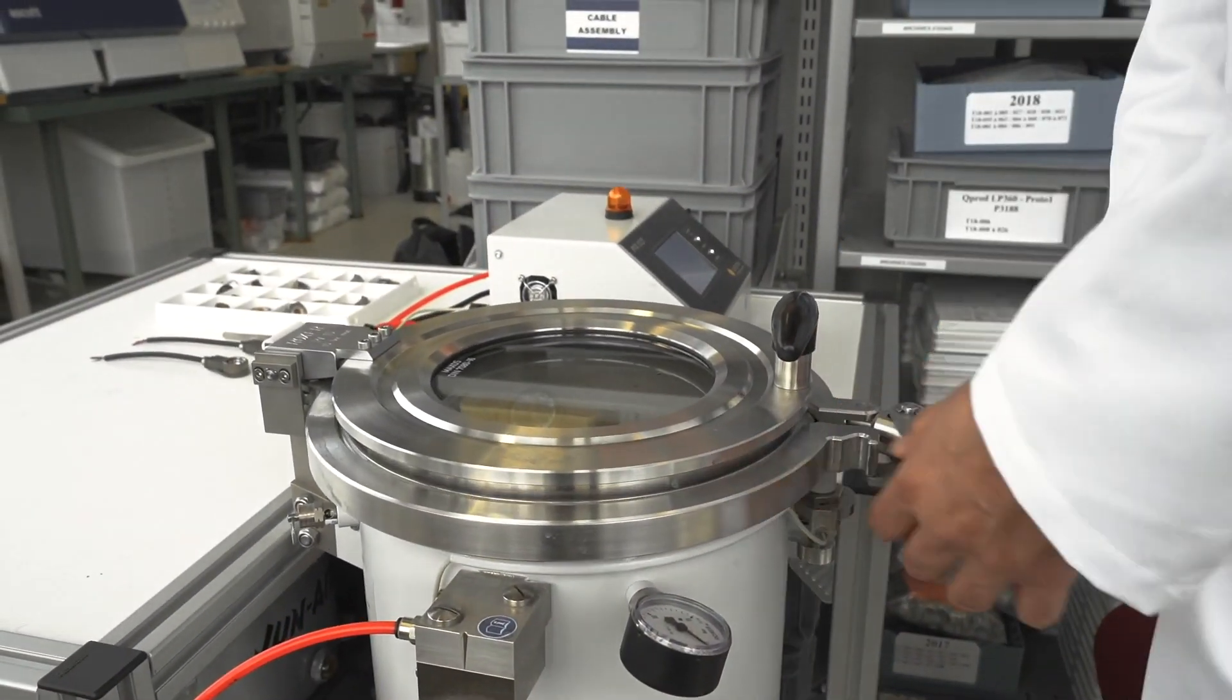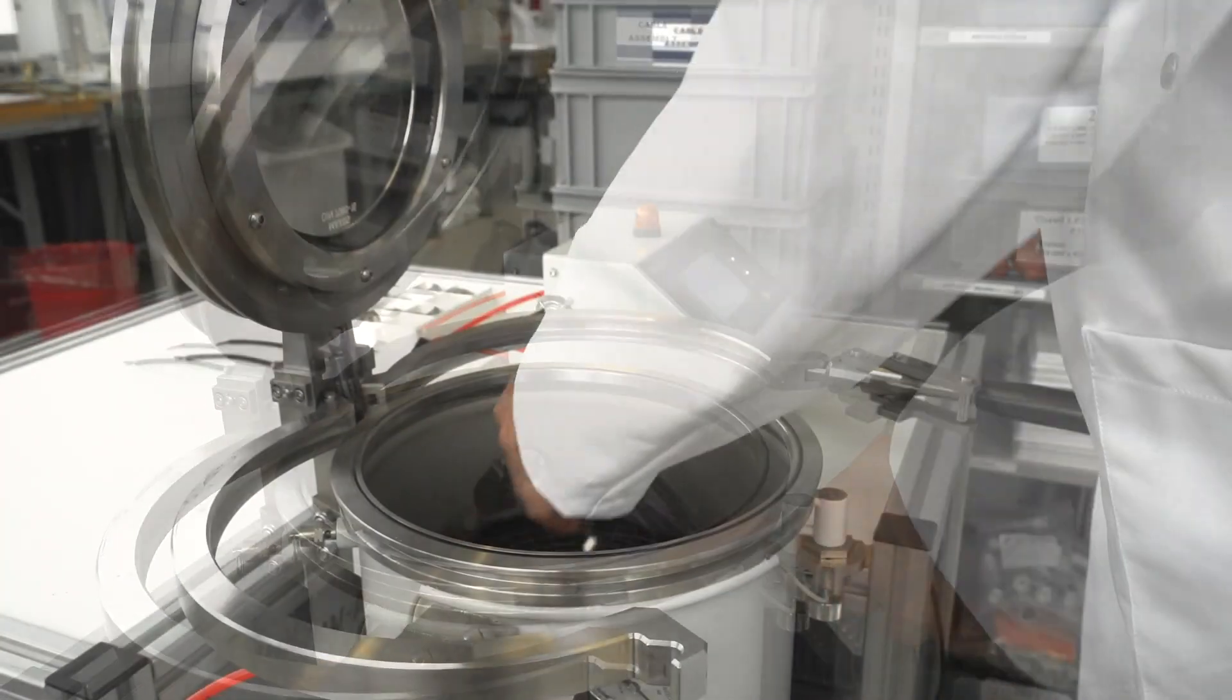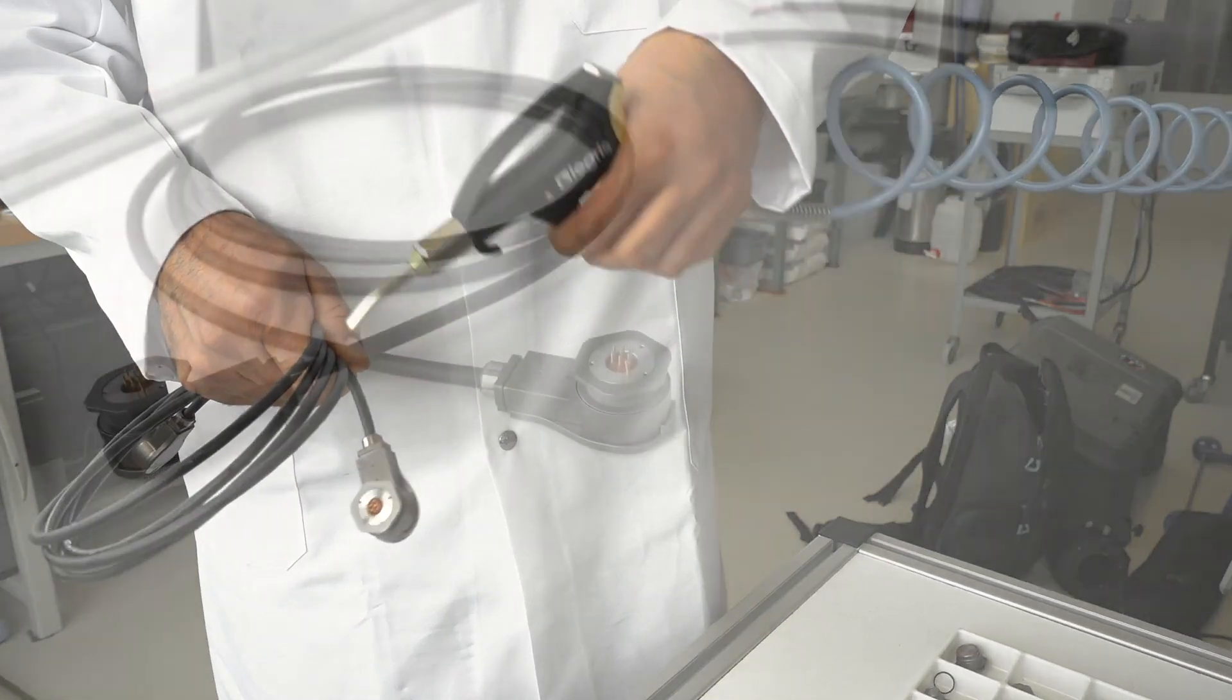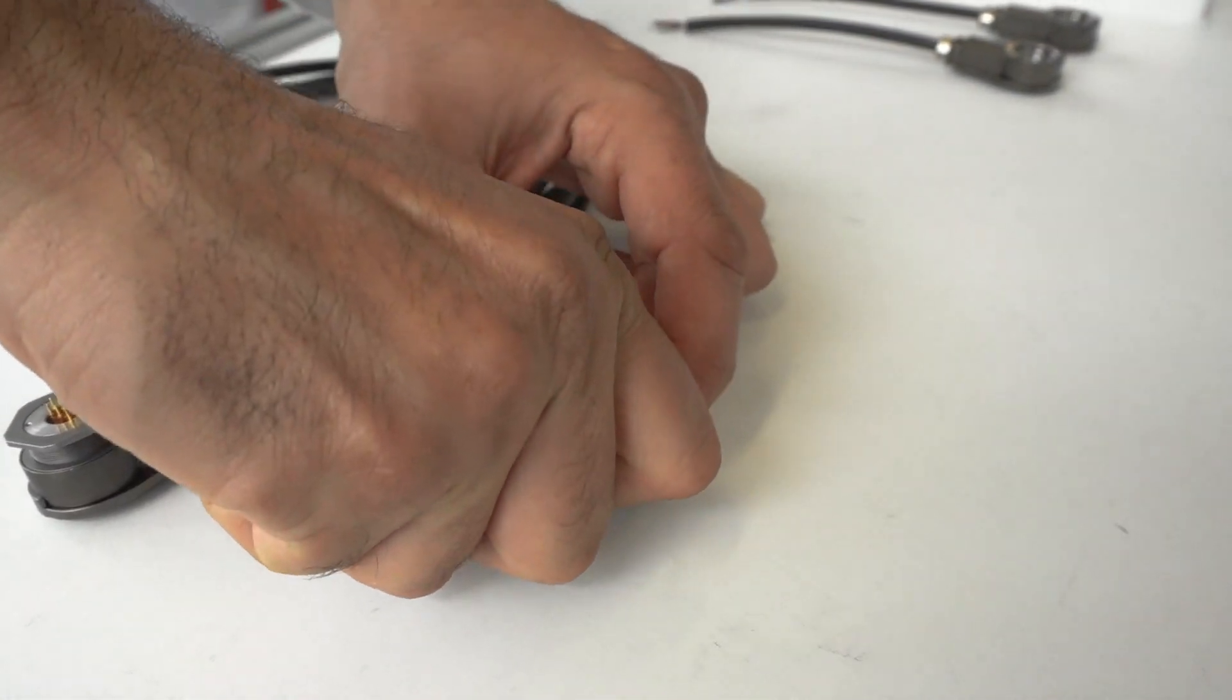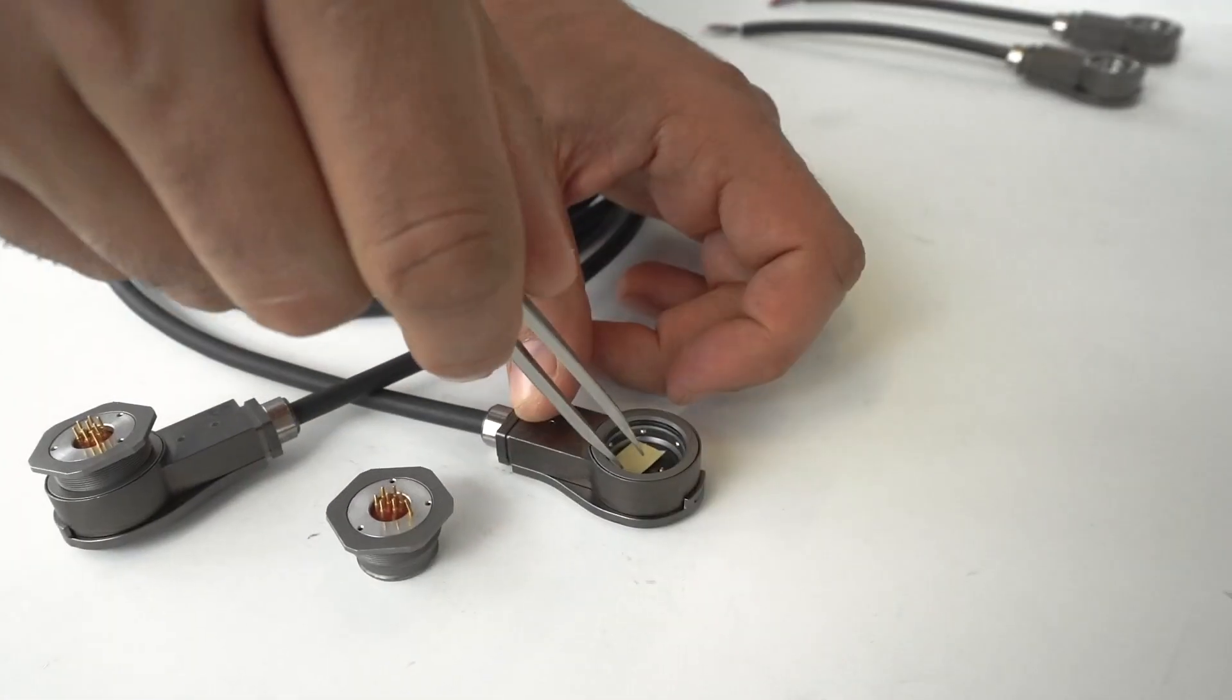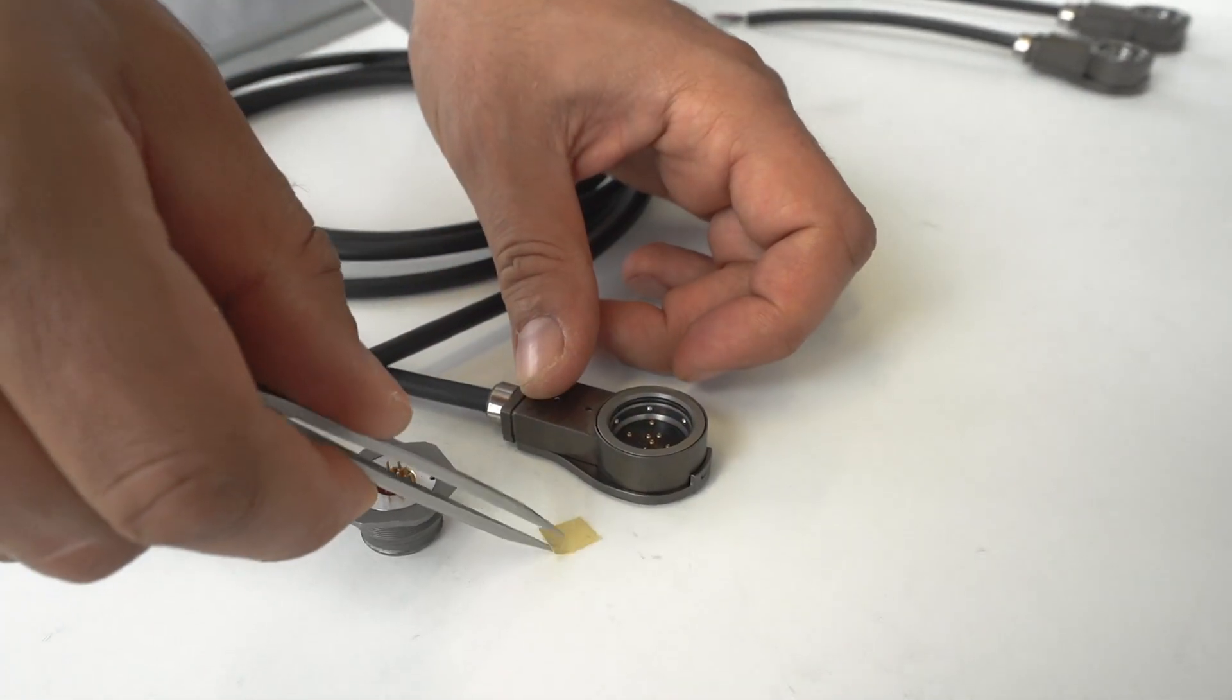After 24 hours of continuous immersion, the connectors are removed from the pressure vessel and unmated. No color change can be seen on the pH indicator paper, which indicates that no water has penetrated the connectors housing.